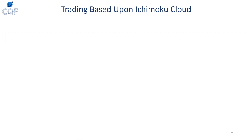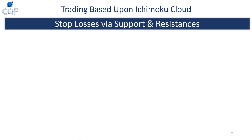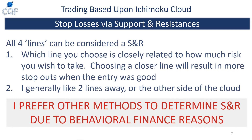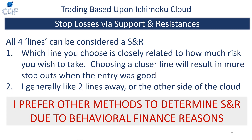Now we have an entry — what about exiting via stop loss or take profit? The Ichimoku allows us to identify supports and resistances. All four lines can be considered support or resistance; which line you choose depends on your risk tolerance and overall strategy. Choosing a closer line results in more stop-outs but lower risk, while a further stop loss has higher risk but a lower chance of getting stopped out. Personally, I like to choose a line about two lines away or the other side of the cloud.